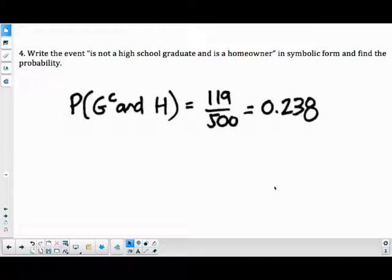Write the event is not a high school graduate and is a homeowner in symbolic form and find the probability. Now you could write and, you could also write the upside down U, that intersection symbol. So probability of not a graduate, the complement of the set of graduates and homeowner. And that's going to be 119 over 500.